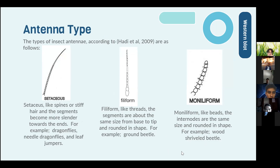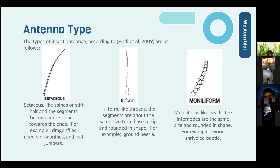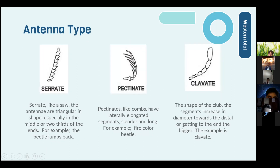Antenna types, according to Headly et al. (2009): first, setaceous — shaped like a bristle or tapering, segments becoming more slender toward the ends (e.g., dragonflies and leaf jumpers). Second, filiform — segments about the same size from base to tip and rounded in shape (e.g., ground beetles). Third, moniliform — bead-like, segments the same size and rounded (e.g., wood-boring beetles). Fourth, serrate — segments triangular in shape, like a saw, especially toward the middle or two-thirds of the end (e.g., click beetles).